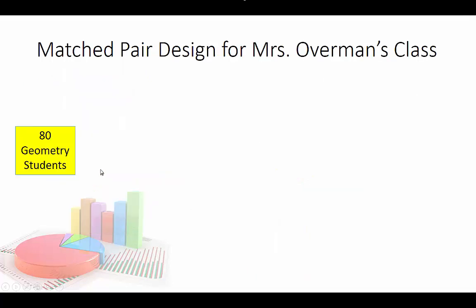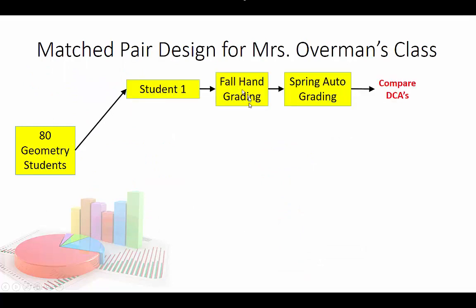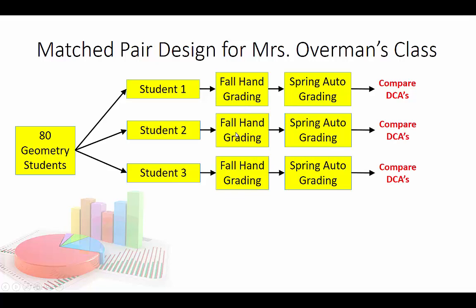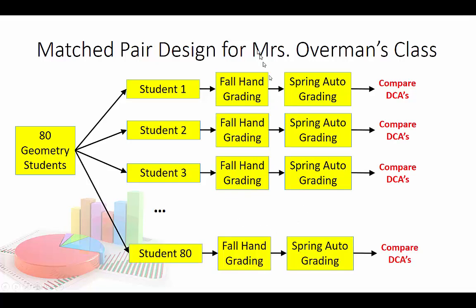Now using my geometry example for the before-and-after: I actually did this. I have a matched pair design with 80 geometry students. We did fall hand grading and then spring auto grading. I chose this method because as a teacher grading all those students, it's much easier not to track which grading method applies to each individual student. I switched to auto grading with Kia in the spring and then compared DCA performance. This is a before-and-after design, and I did see improvement.